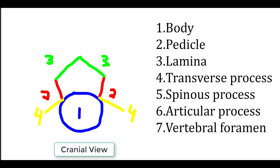The spinous process is found dorsally where the two lamina unite — it's a dorsal projection. The articular process is found where the lamina and the pedicle unite.